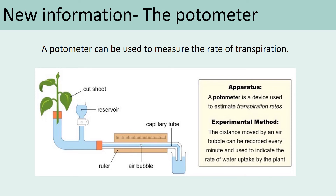As I'm talking about the potometer, you might want to annotate your picture to show how it actually works. A potometer is used on plants — you take your plant cutting and put it into one end of the piece of equipment. You can see it uses a bung to make sure there are no gaps left around the outside of the plant.